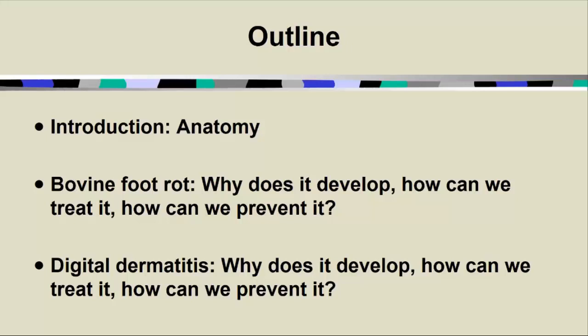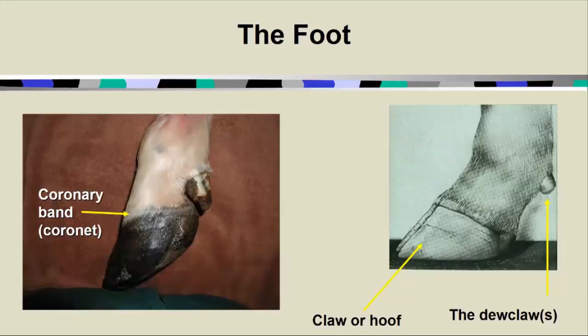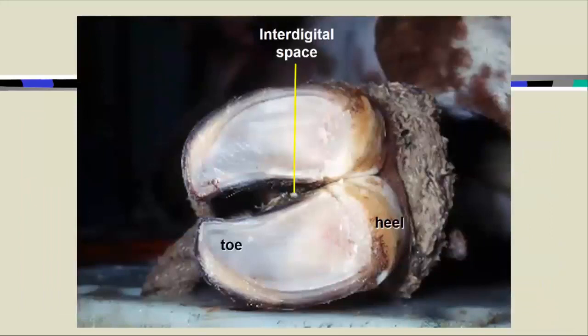So let's start with some anatomy. When we talk about the bovine foot, we're talking about both digits of the cloven-hoofed animal. The coronary band or coronet marks the junction of the hard hoof — also known as claw — with the soft, supple-haired skin that lies above or proximal to the coronary band. The dewclaws are those little nubbins of horn that stick out from the back of the fetlock or ankle area. When we look at the solar surface, we've got the toe at the front, the heel at the back, and the interdigital space is simply the cleft between the two hooves.